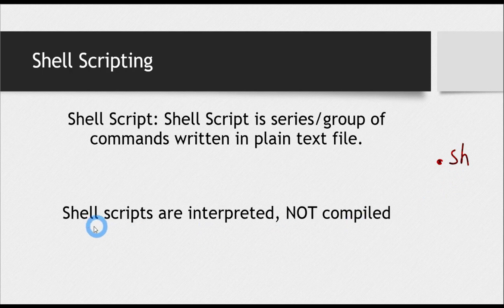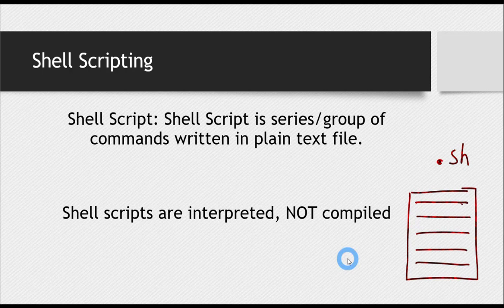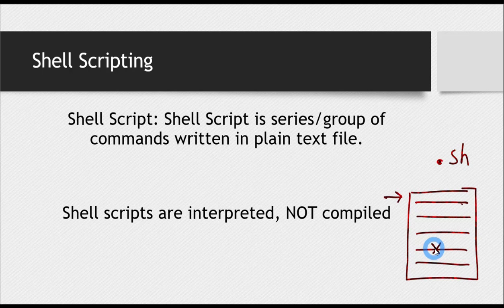One very important thing is shell scripts are interpreted, not compiled. There is a difference between interpreting and compiling. Languages which are interpreted are read line by line, executed line by line. If there is some error at a particular line, the output of all lines before it will be given until the interpreter reaches that point. When the script reaches the error, execution stops and the rest of the lines won't be interpreted. Their output won't be given, but the output of the previous lines will be.